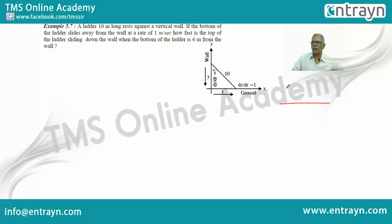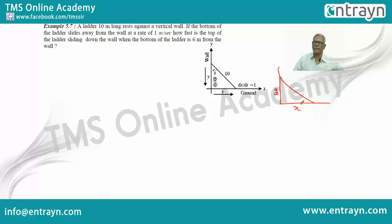This is the floor and this is the wall, and this is the ladder. If this distance is X and this is Y — generally, horizontal is always for X and the vertical is always for Y.